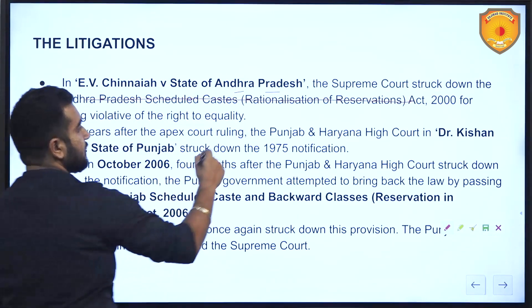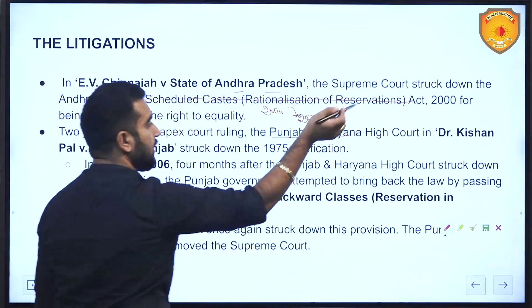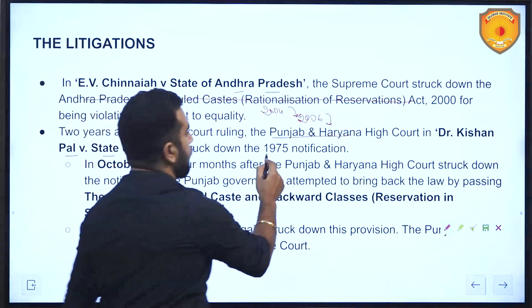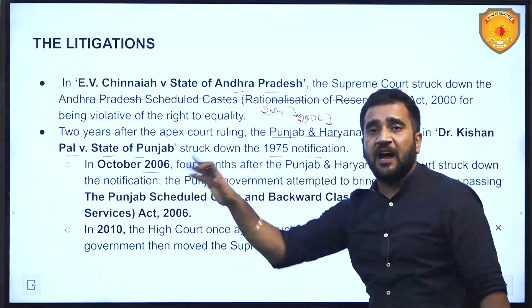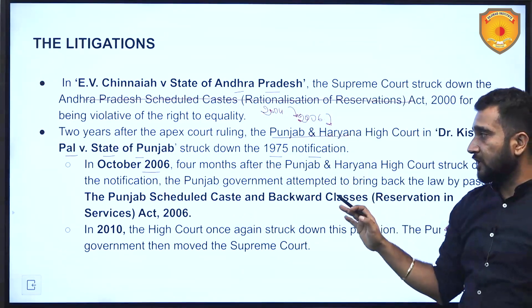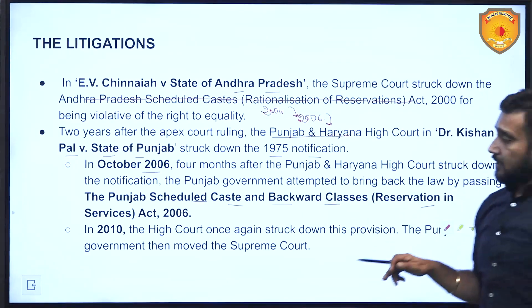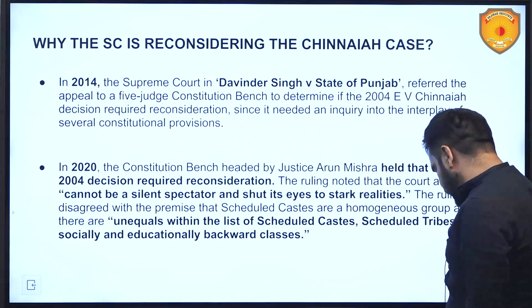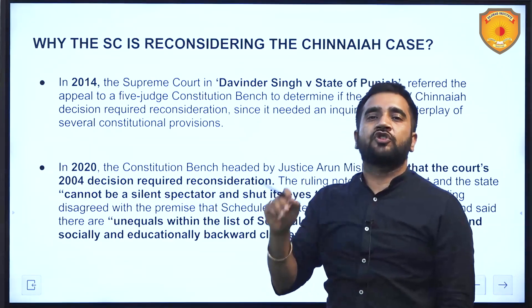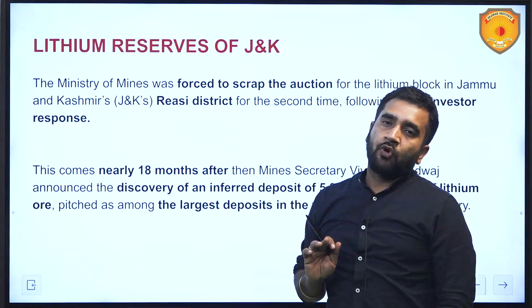Two years after the 2004 E.V. Chinnaiah judgment, in 2006 the Punjab and Haryana High Court in Dr. Kishan Pal versus State of Punjab struck down the 1975 Punjab notification. Four months after that, the Punjab government passed the Punjab Scheduled Castes and Backward Classes Reservation in Services Act 2006, but in 2010 this law was also scrapped. By then, no state or even the central government had sub-categorization for the Scheduled Caste or Scheduled Tribe list.